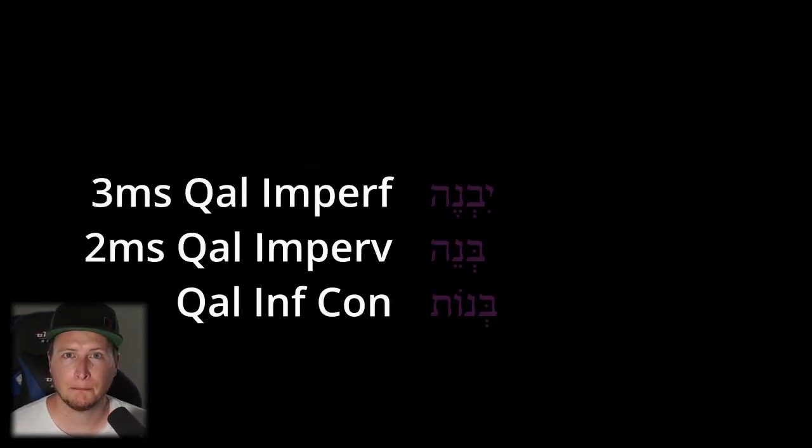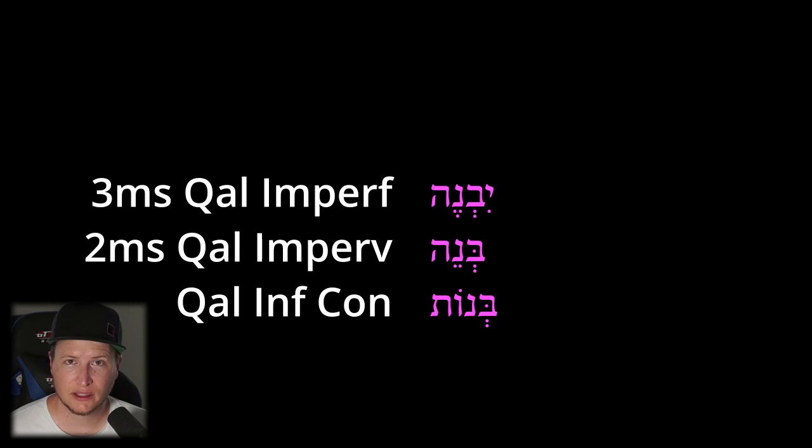Simply be able to recognize it — that's it. Now a special note on third-hey verbs: for these weak verbs there are some variations in the endings. Keep in mind that infinitives are verbal nouns, so just as we see with nouns with a third-hey, sometimes we see third-hey verbs with oth endings. Look at bana, to build: in the imperfect we have yivneh, in the imperative we have b'neh, and in the infinitive construct we have bnoth.